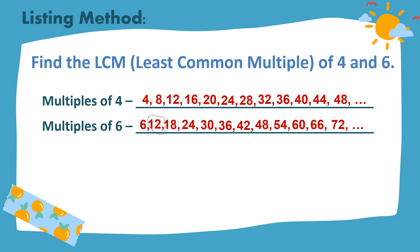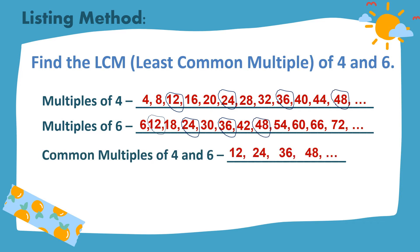Now, what are the common multiples of 4 and 6? We have 12, 24, 36, 48, and so on. Meaning there are still more common multiples of 4 and 6. But the least among them is 12.